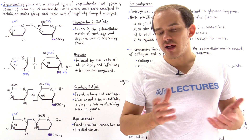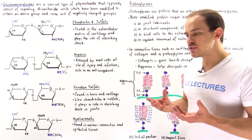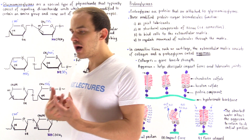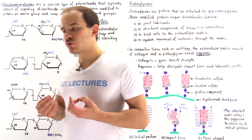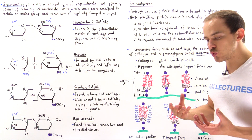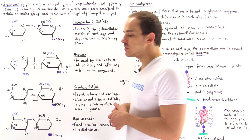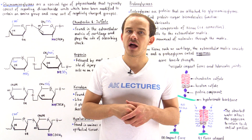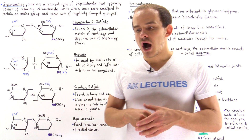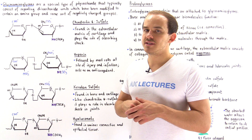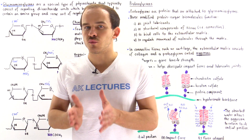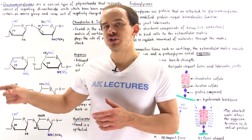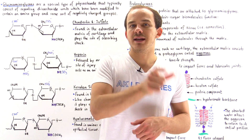Since we're on the subject of polysaccharides, let's focus on a specific group of polysaccharides that exist inside our body and play a very important role. This group is known as glycosaminoglycans. A glycosaminoglycan is a special type of polysaccharide that consists of repeating disaccharide units — two sugars that repeat again and again.